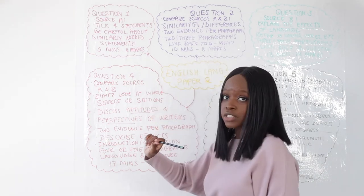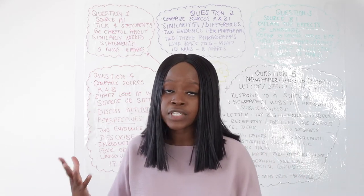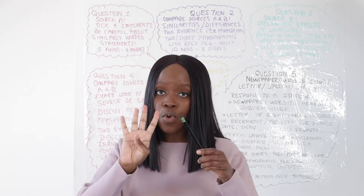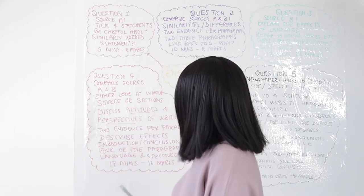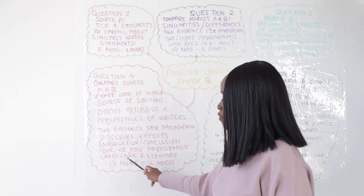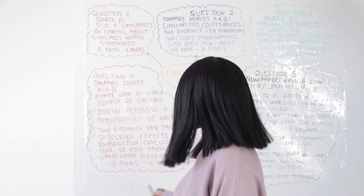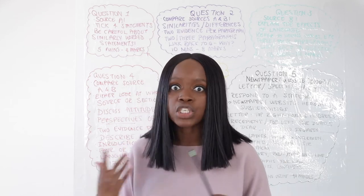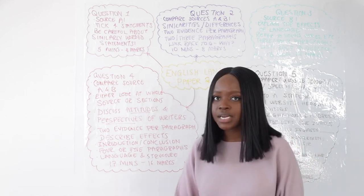Always start with an introduction to introduce your question and link it back to the statement and the sources, then develop at least four paragraphs. Within each paragraph you add two pieces of evidence, so with four PEE paragraphs you are including eight quotations in total. End with a conclusion and have a mix of language points — nouns, verbs, adjectives, adverbs, similes, metaphors — and also structure points, such as how extracts begin versus how they end, sentence types, and punctuation. Given this question is worth 16 marks, I would suggest spending 17 minutes.